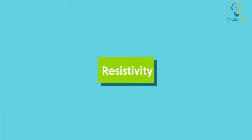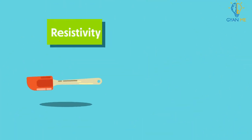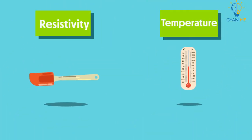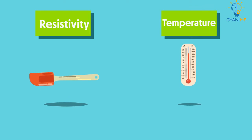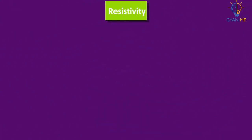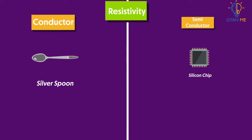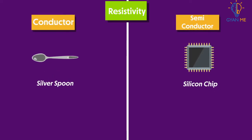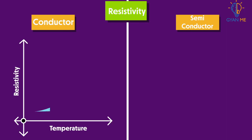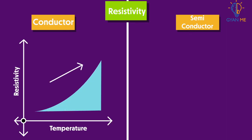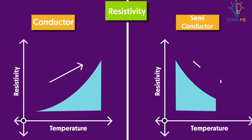As we know, the resistivity of a material depends on the temperature of the conductor. The resistivity of a metallic conductor increases with an increase in its temperature, whereas the resistivity of a semiconductor decreases with an increase in its temperature.